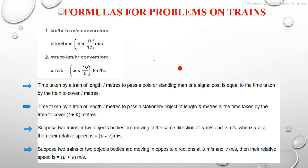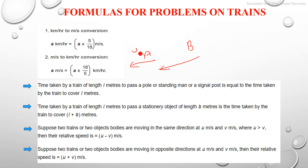Suppose two trains or two objects are moving in the same direction at u meters per second and v meters per second, where u is greater than v. Their relative speed is u minus v meters per second. If there are two trains A and B moving in the same direction - A with u meters per second and B with v meters per second - the relative speed is u minus v. We take the modulus, i.e., the difference.